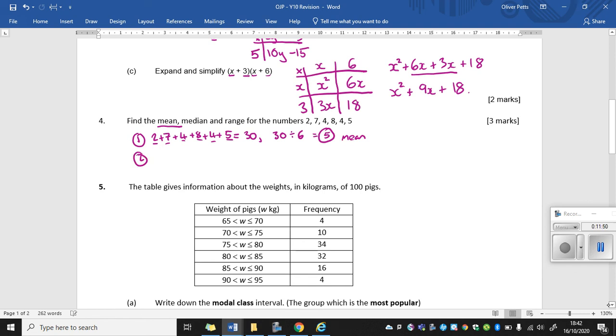OK, second thing we need to work out is the median. Now to find the median, we need to put our numbers in order first. It can either go smallest to largest or largest to smallest. Your choice. So we have a 2 as our smallest number. Then we have a couple of 4s, then a 5, then a 7, then an 8. So now we need to find the middle of those numbers.